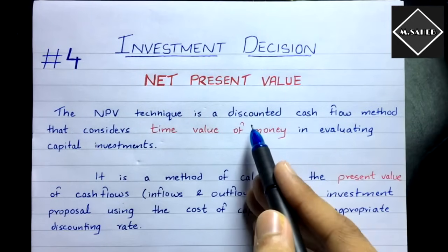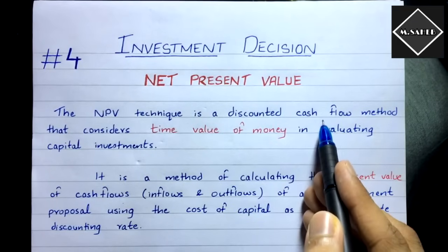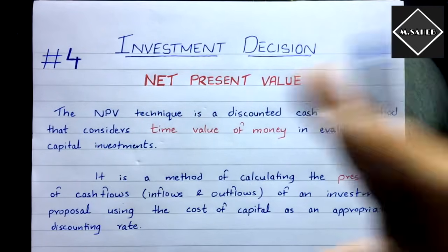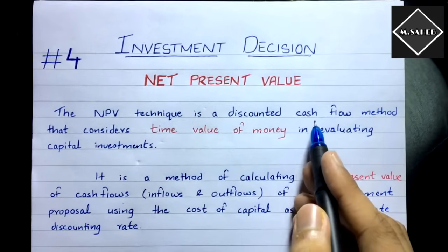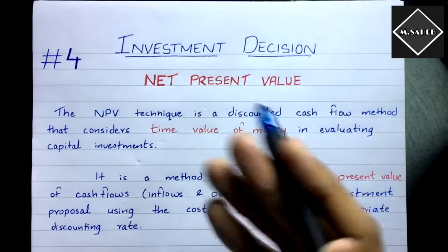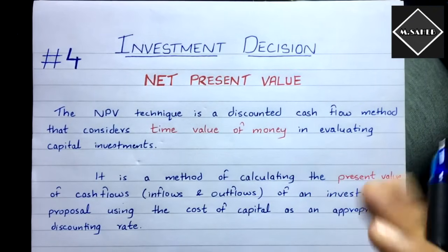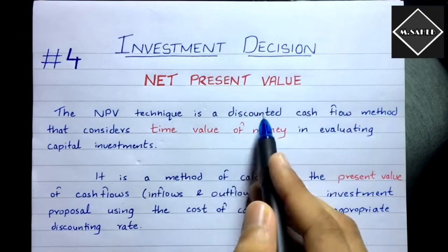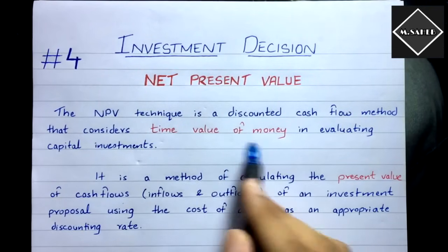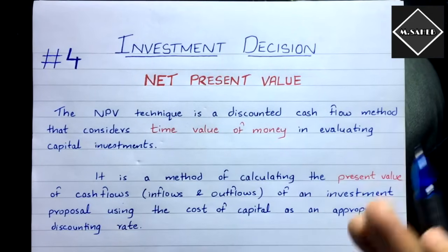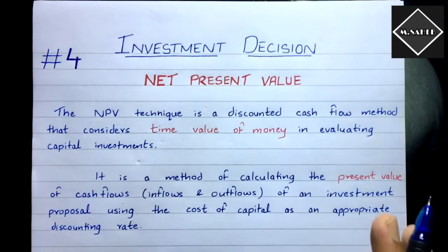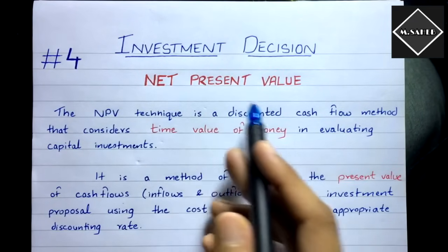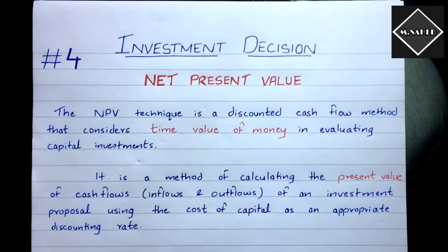In this technique, whatever cash flows there are — inflows and outflows — those will be discounted. The cash flows are based on estimates; they are not 100% certain. Those inflows and outflows will be discounted, and the most important concept here is the time value of money. Discounting and time value of money are interrelated, so let's understand those first.